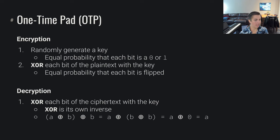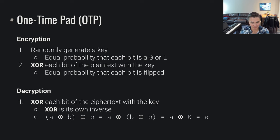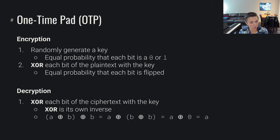Decryption actually works the same way — you just XOR each bit of the ciphertext with the key. The reason this works is that XOR is its own inverse. If we have A XOR B XOR B, using the associative property, that's the same as A XOR (B XOR B), which equals A XOR 0, because B XOR B is zero. And A XOR 0 is just A — anything XORed with zero is its original self.